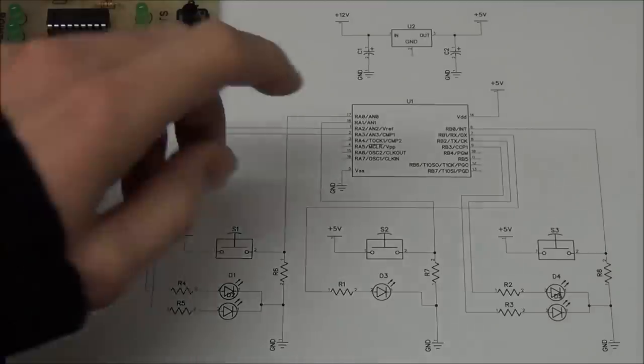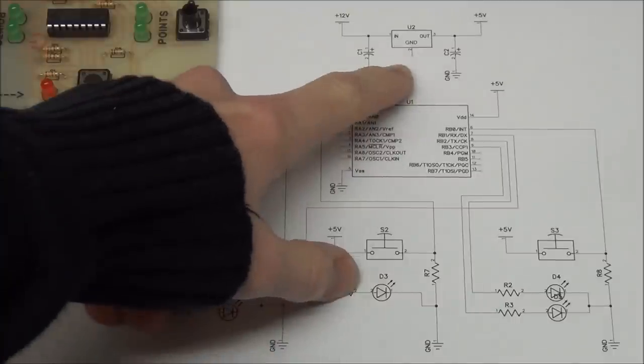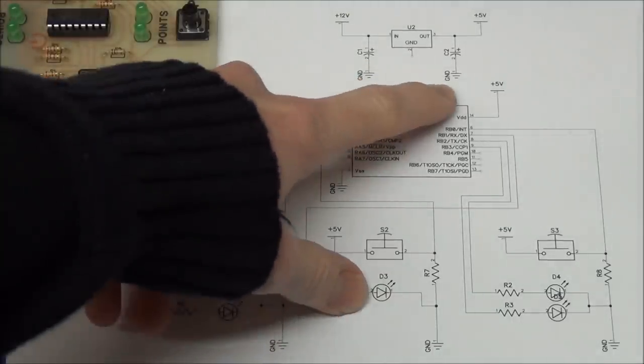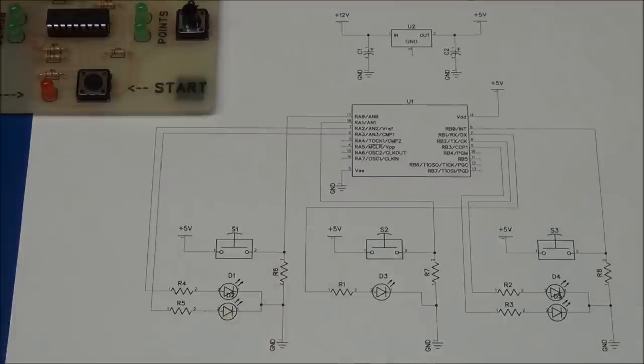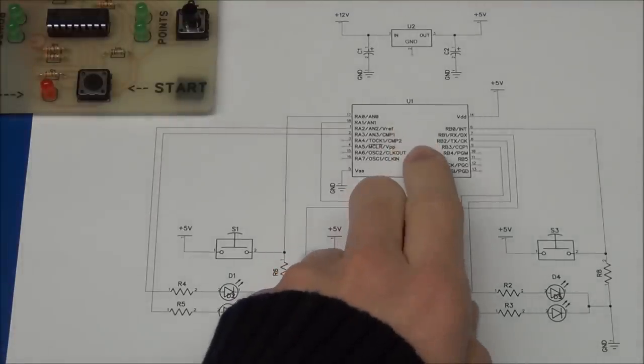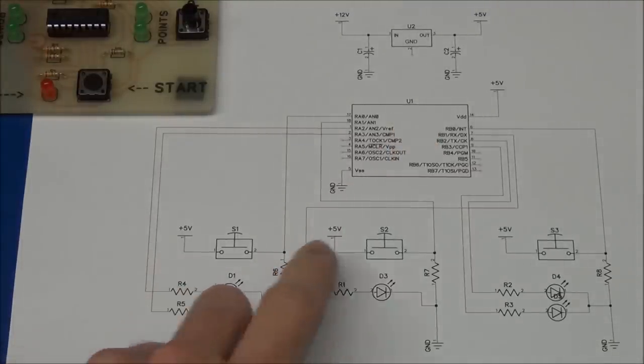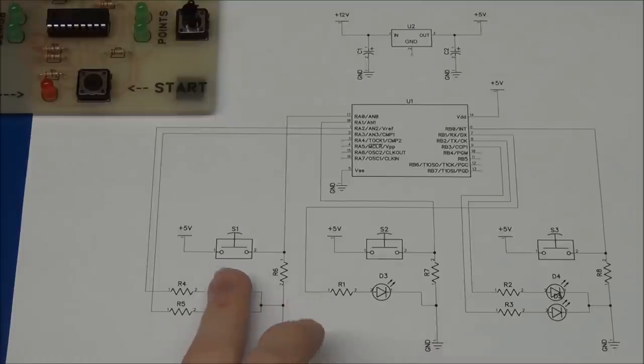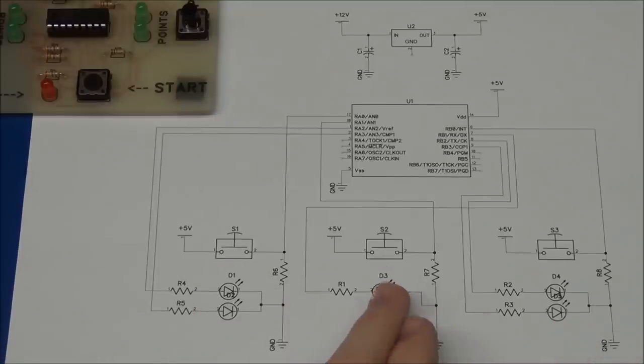As we can see here it's all powered from five volts from this voltage regulator. And we have an input and an output capacitor. So we have five volts at the microcontroller and at one side of each of the buttons. And we have three buttons. One for each player and the start button. And for each player we have two LEDs and we have the ready LED, the red one here.